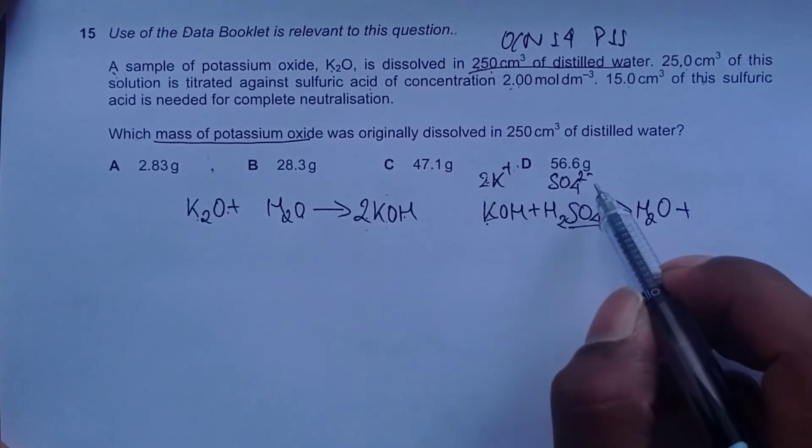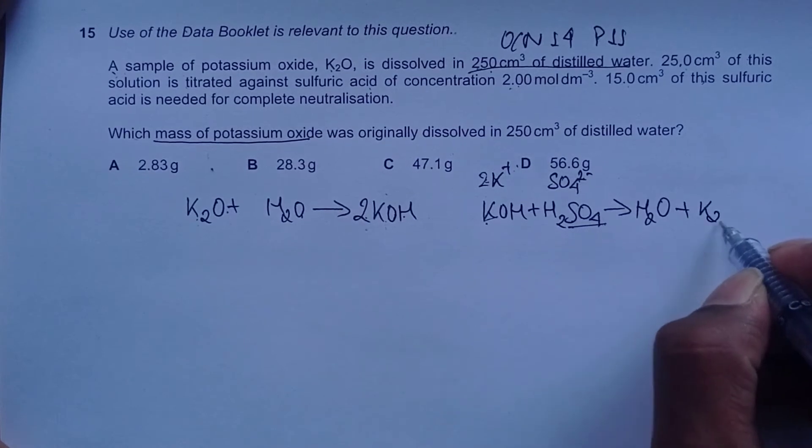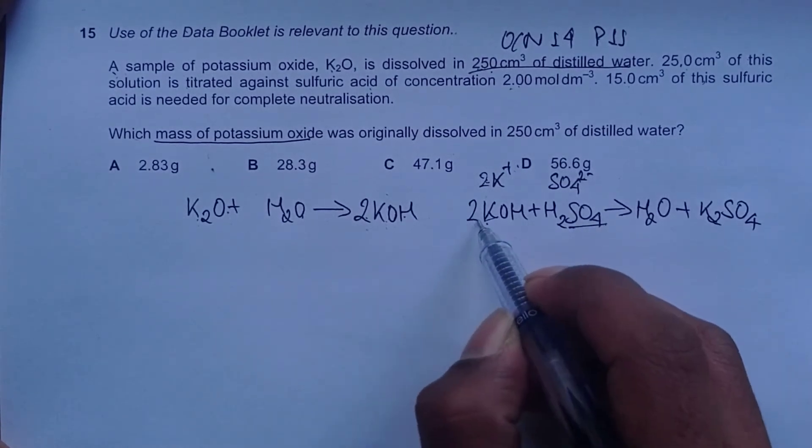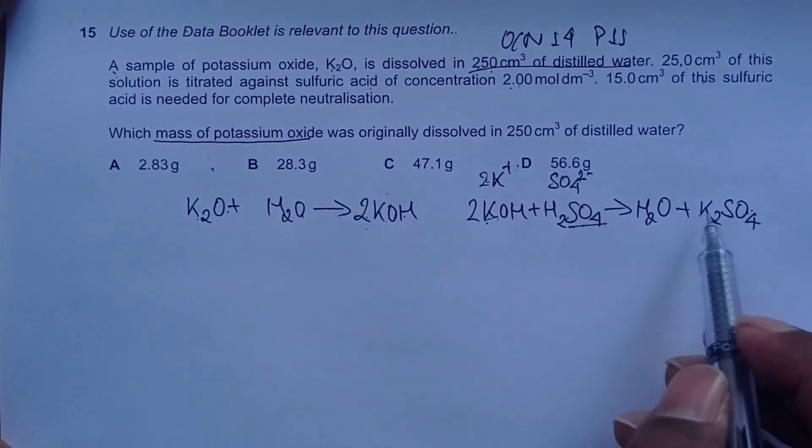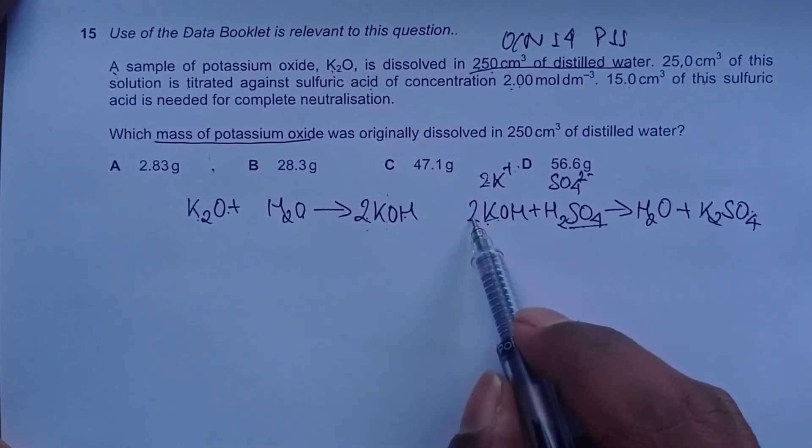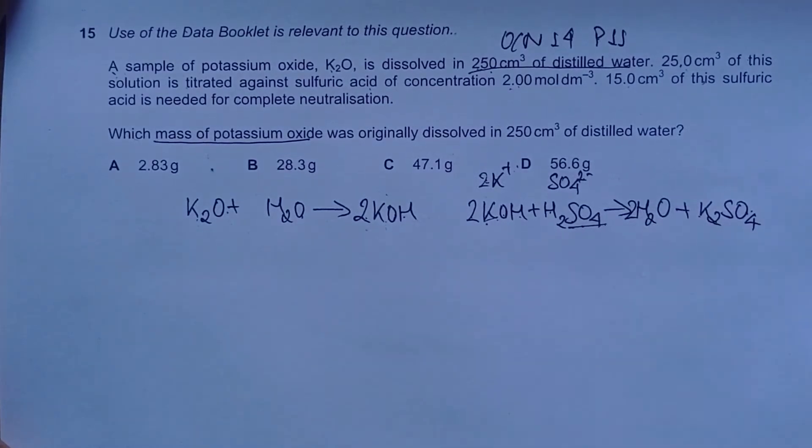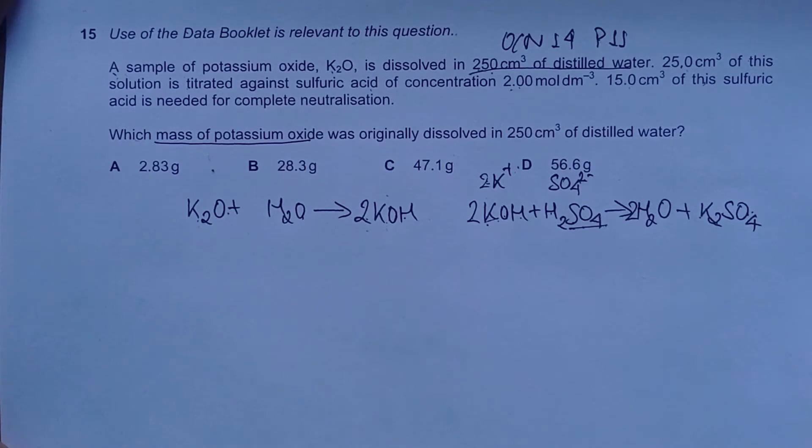The salt should include SO4 and potassium. Potassium exists as K⁺ and SO4 as SO4²⁻, so we need two K to make it neutral. Our compound is K2SO4. Balancing: two potassium here, two here, SO4 is balanced. For water: 2 hydrogen, 4 hydrogen, 1-2 oxygen, so adding 2 here does the job.